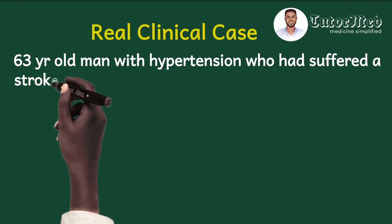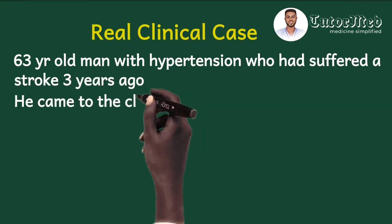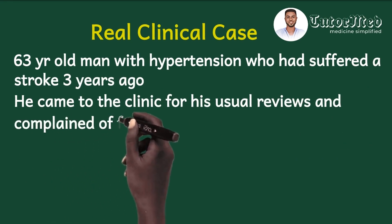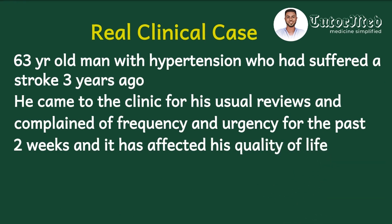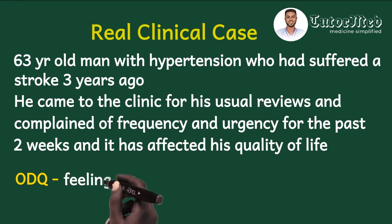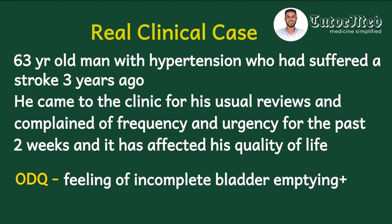Now for the clinical case: a 63-year-old man with hypertension who had suffered a stroke about three years ago came to the clinic for his usual review. He complained of increased frequency of urination and urgency for the past two weeks, affecting his quality of life. On direct questioning, he reported a feeling of incomplete bladder emptying, suggesting possible bladder outlet obstruction — commonly BPH. He did not have dysuria, nocturia, or voiding symptoms like hesitancy or poor urinary stream. A DRE revealed a large prostate, so I requested a PSA and a urine RE.